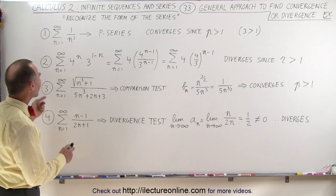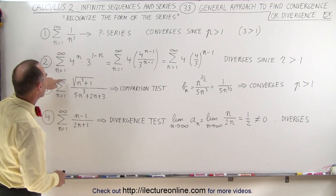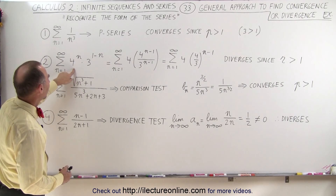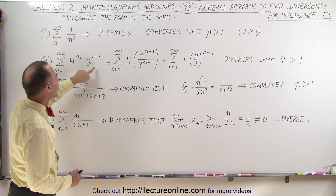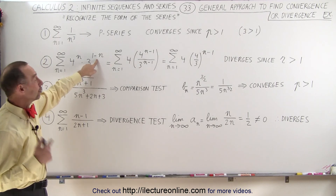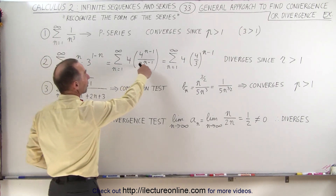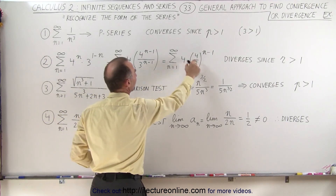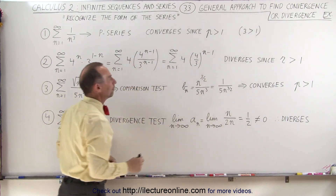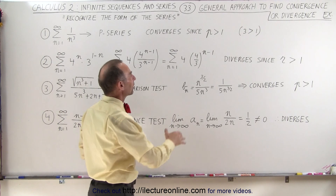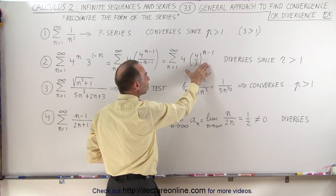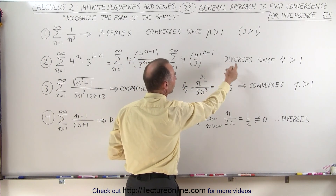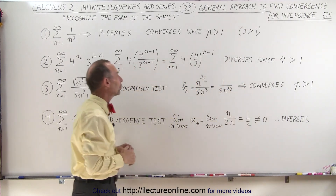On the second example we have our infinite series, and we recognize that we can pull out a four. When we bring the three to the denominator, changing the sign of the numerator, we can see that the exponents are equal to one another and we can write this as four times four-thirds to the n minus one power. This series will diverge because consecutive terms will become larger and larger since the common ratio is greater than one.